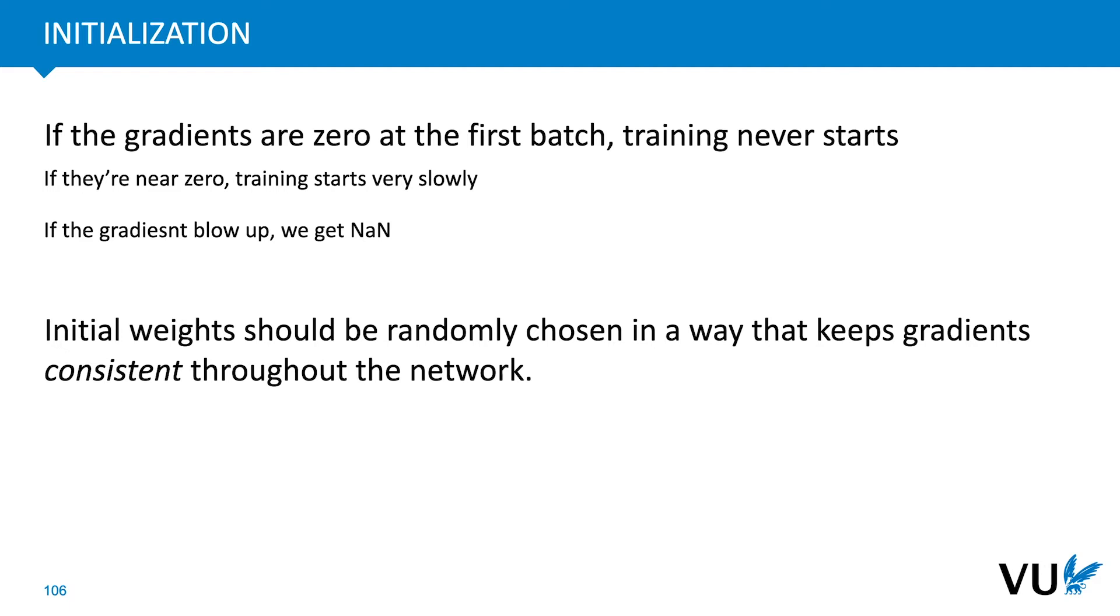Initialization is the method by which we choose the initial values of the weights before we start training the neural network. This is important because if the gradients are zero for this first batch then training will never start, and if the training never starts then the network weights never change and we never learn anything. And if the gradients are not quite zero but relatively near zero, then training starts very slowly and it takes a long time to get anywhere.